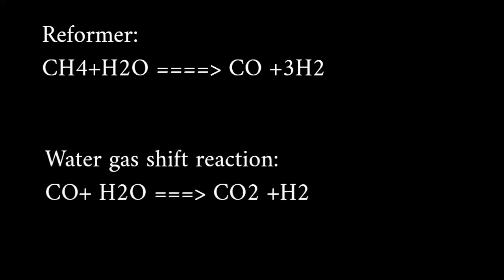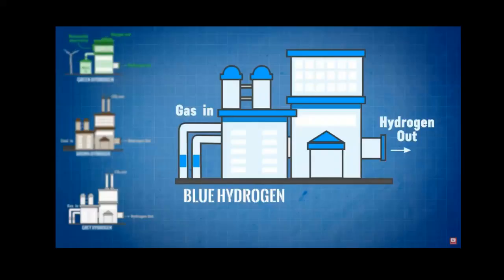Water is added to that mixture, turning the carbon monoxide into carbon dioxide and more hydrogen in a process called the water gas shift reaction. If the carbon dioxide emissions are then captured and stored underground, the process is considered carbon neutral and the resulting hydrogen is called blue hydrogen.